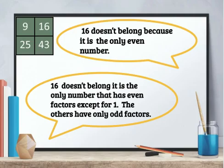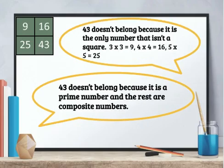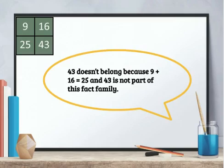16 doesn't belong because it is the only number that has even factors except for one; the others have only odd factors. 43 doesn't belong because it's the only number that isn't a square. 43 doesn't belong because it is a prime number and the rest are composite numbers.